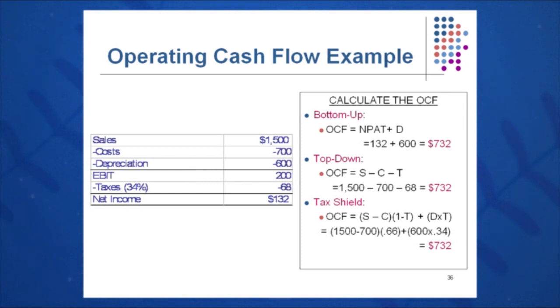Do the bottom-up: NPAT plus D — 132 plus 600 — and you still get 732, and so on. Use all the alternate methods of calculating OCF and you should still get the same answer.